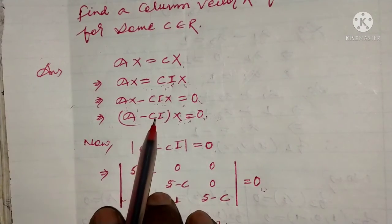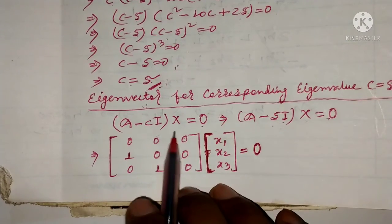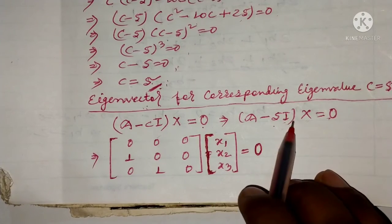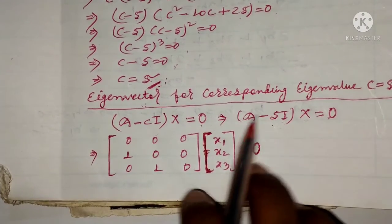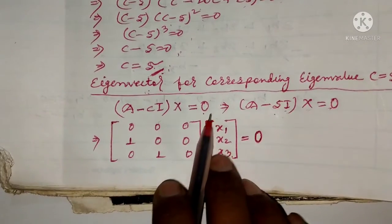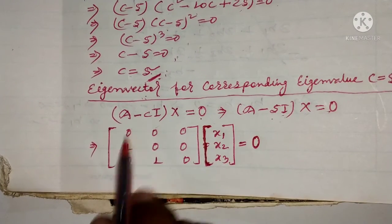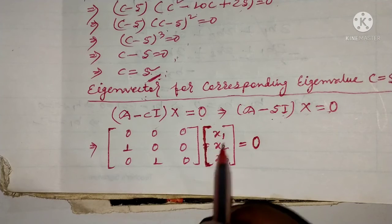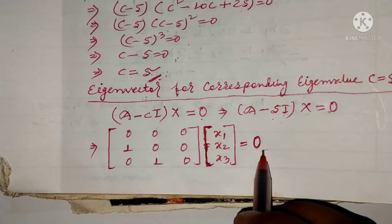Now that we know the value of c, we can put this value back into the equation. We have (A - cI)X equals zero, which implies (A - 5I)X equals zero. The matrix (A - 5I) gives us this matrix times the column vector x1, x2, x3, which we need to find, equals zero.